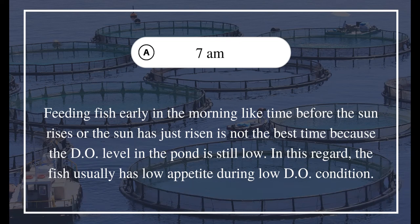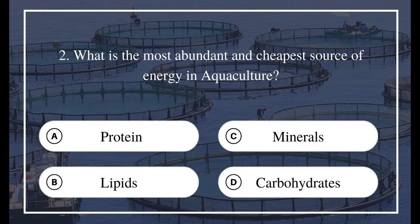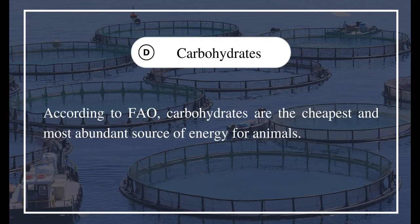In this regard, fish usually has low appetite during low DO conditions. Question 2: What is the most abundant and cheapest source of energy in aquaculture? A) Protein, B) Lipids, C) Minerals, D) Carbohydrates. The answer is D) Carbohydrates. According to FAO, carbohydrates are the cheapest and most abundant source of energy for animals.